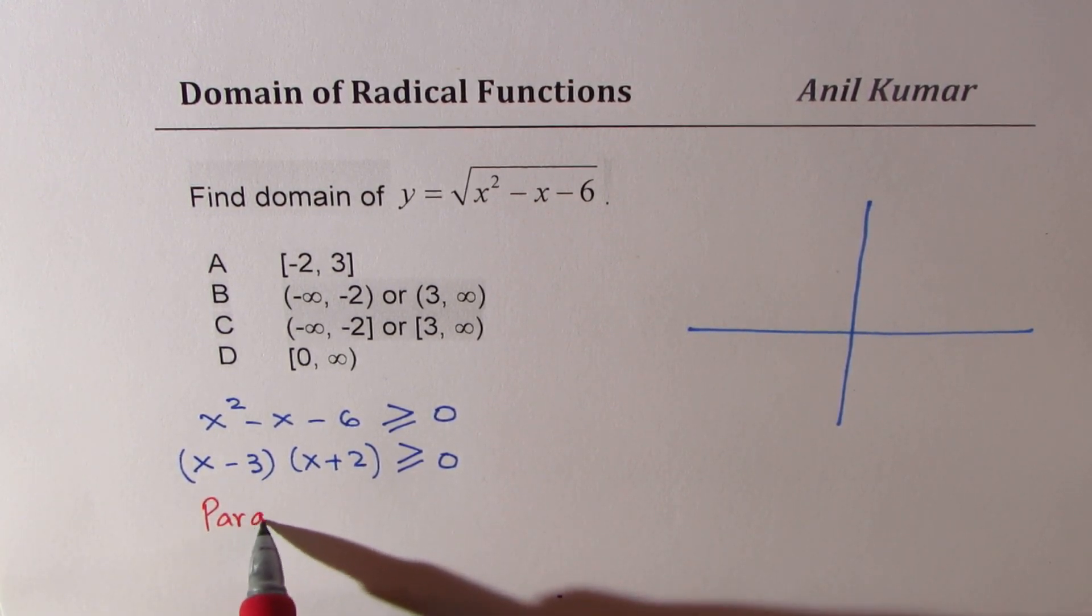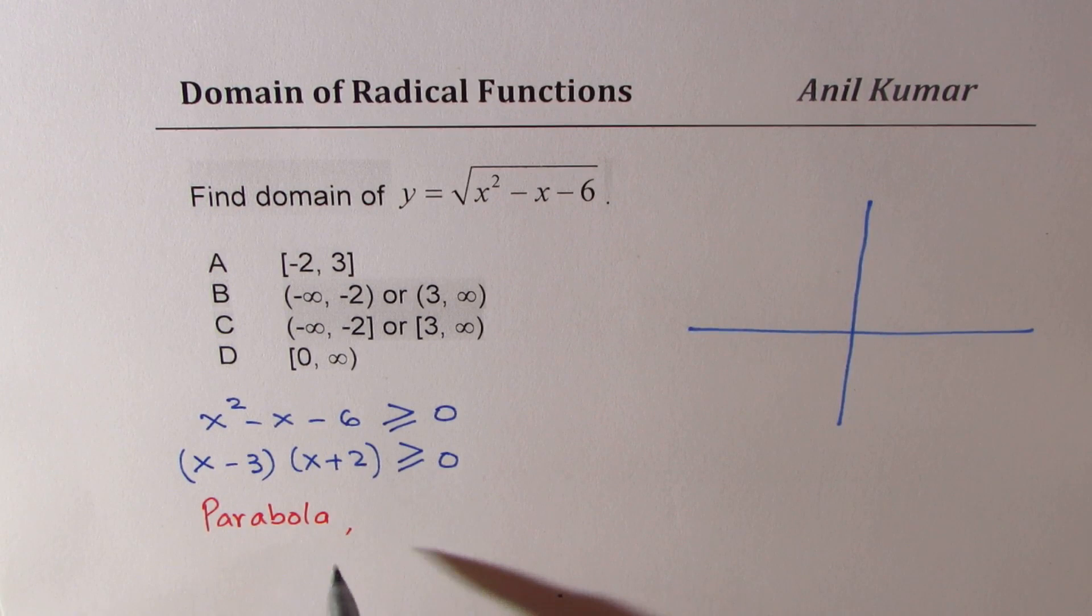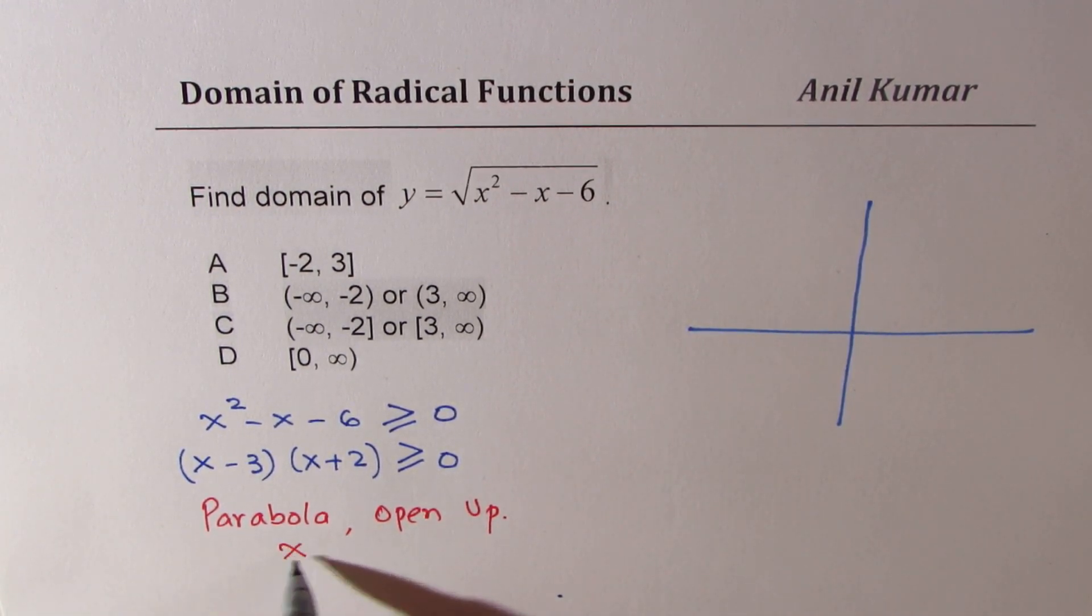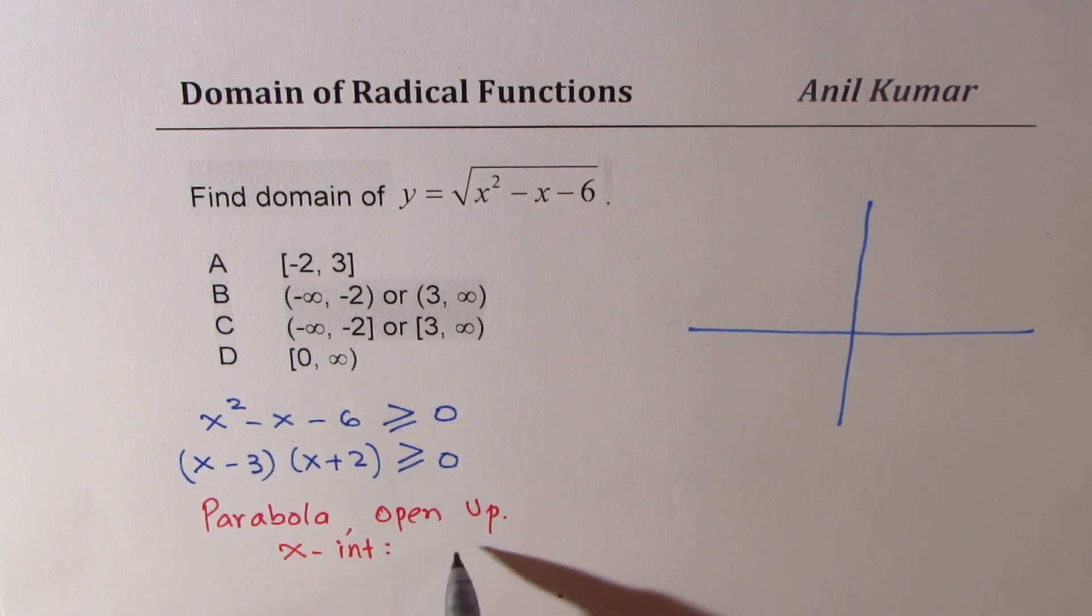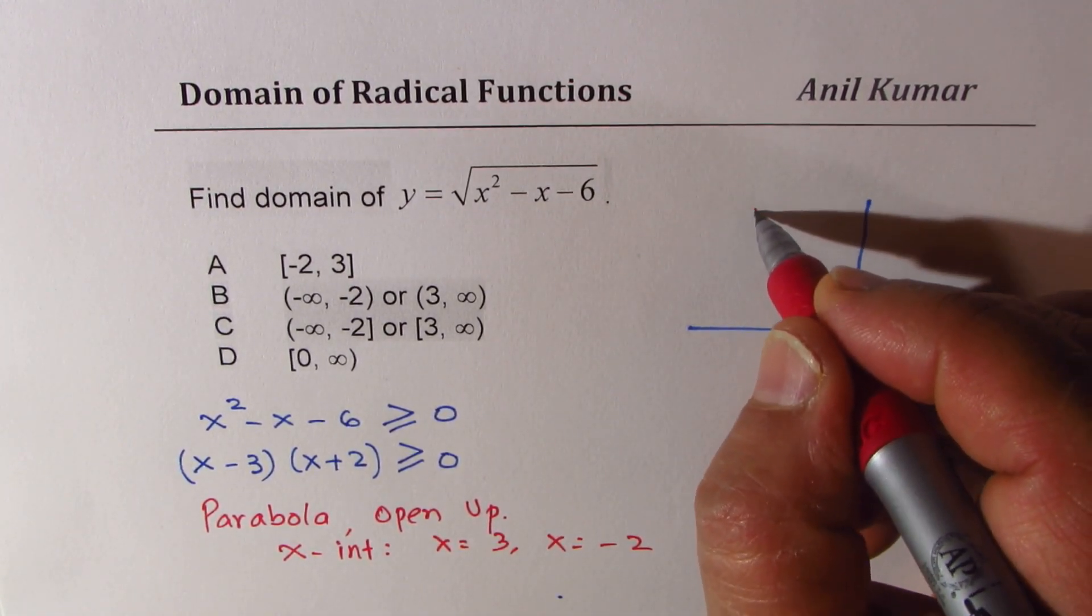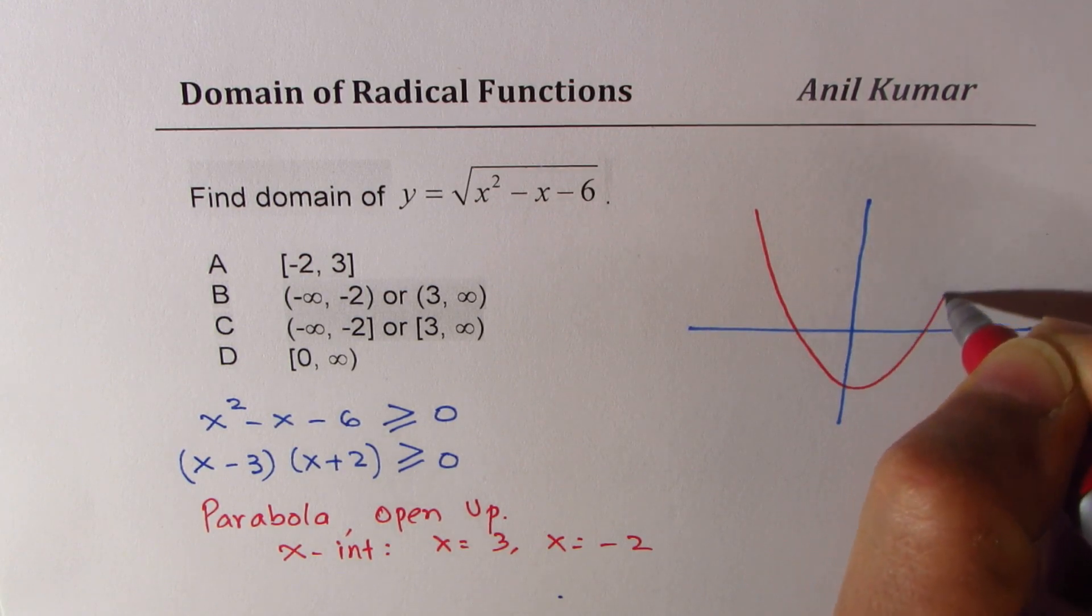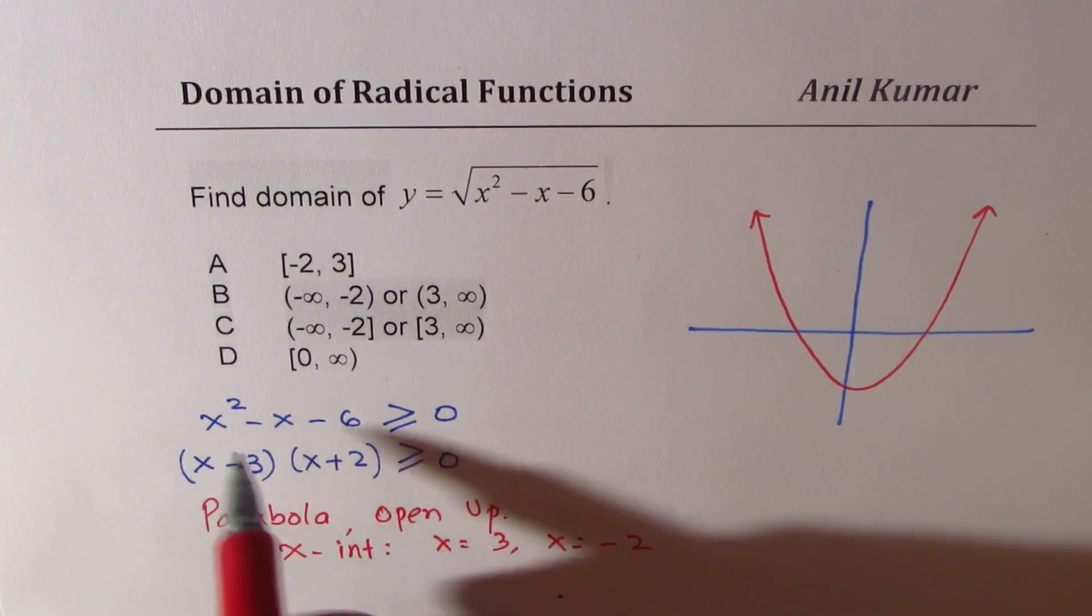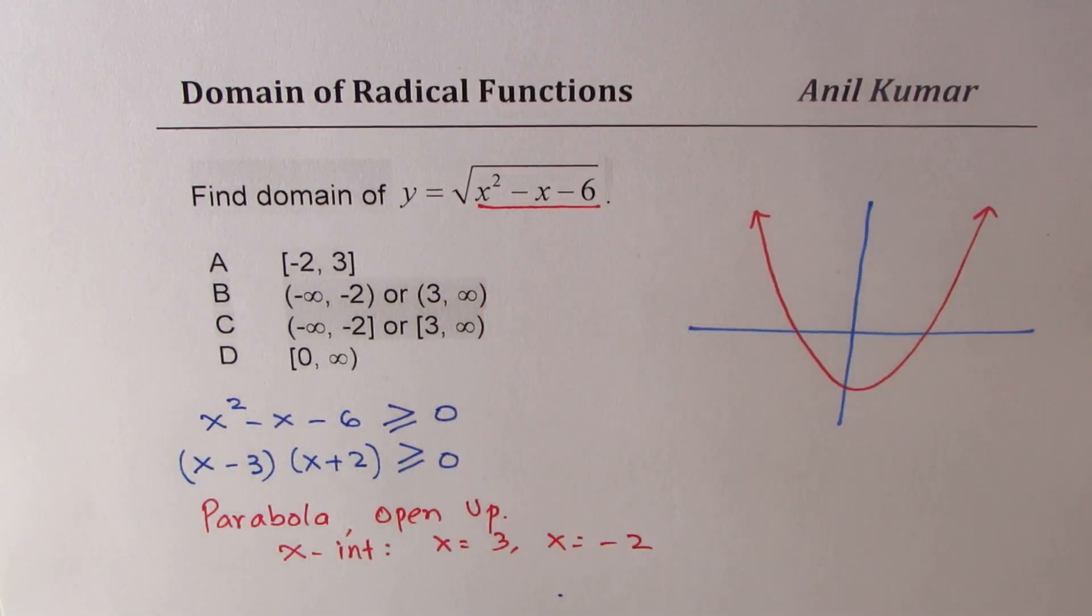Plotting at minus 2 and 3, that becomes the graph of the inside function. Now from the graph you can very clearly see when the function is positive. We have to include the zeros also.